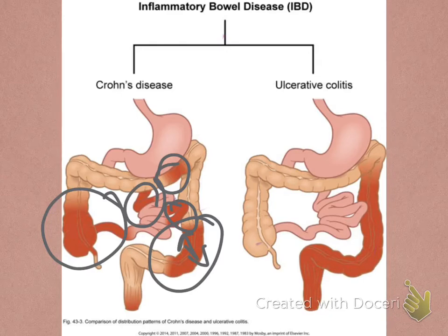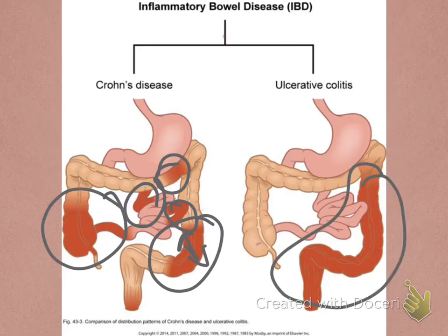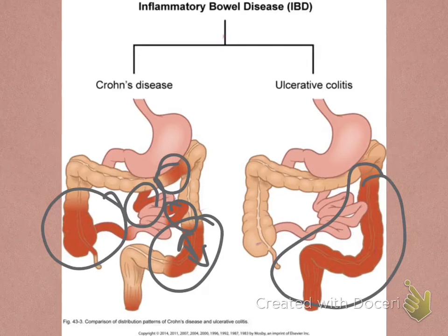For ulcerative colitis, this is going to affect the mucosal layers of the rectum and the colon — much lower in the GI system. Because it is affecting the mucosal layers, these patients will develop ulcers and have bloody diarrhea. They'll often also report abdominal pain, and patients with ulcerative colitis can have up to 20 stools per day.